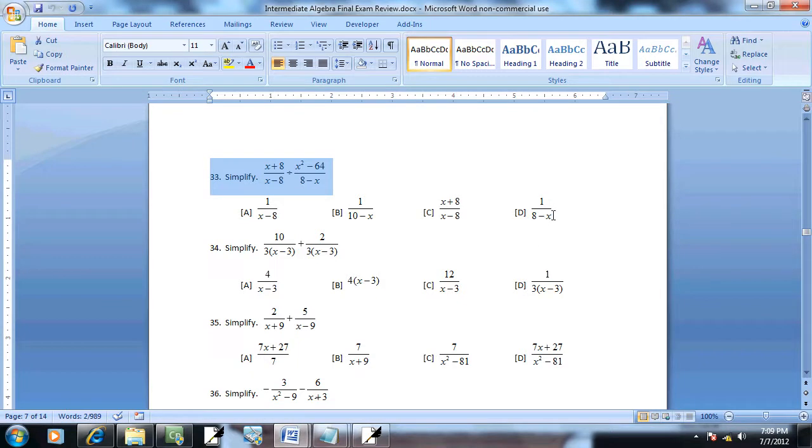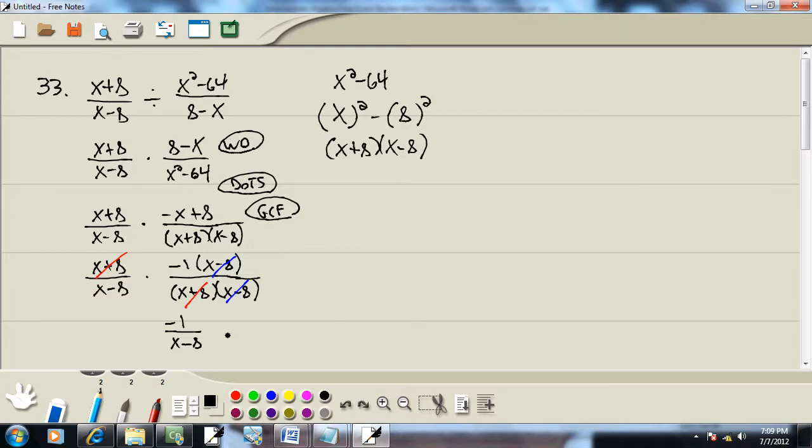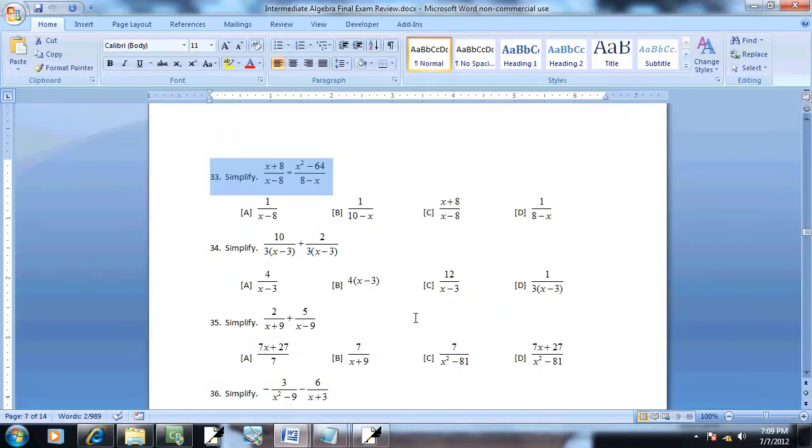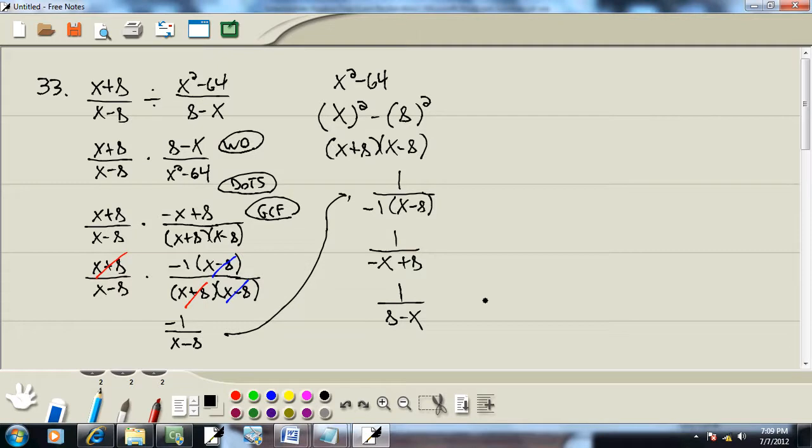Now they write it a little bit different here. They put the negative downstairs, it looks like. So let me just show you what they did. They put the negative back down here. And then if you multiply that through, you get negative 1 times x which is negative x, and negative 1 times negative 8 which is a positive 8, which gives us 1 over 8 minus x when we reverse it. Which is d as in David.